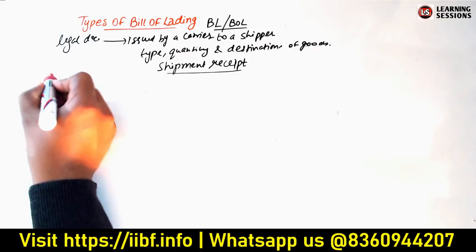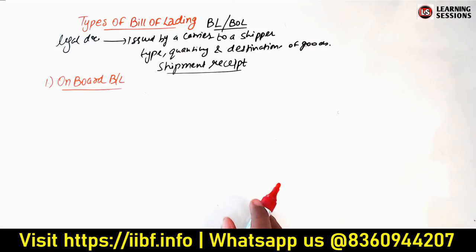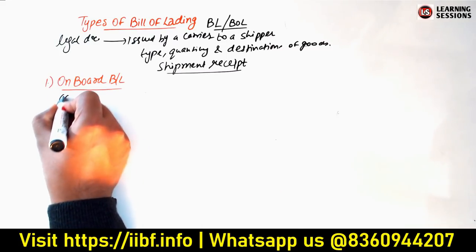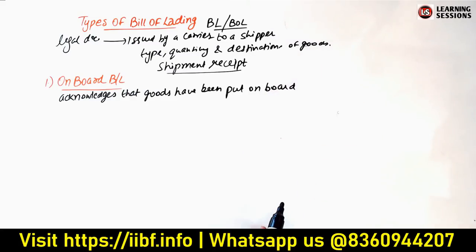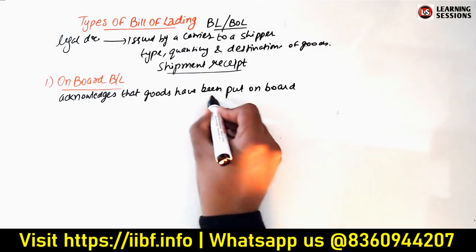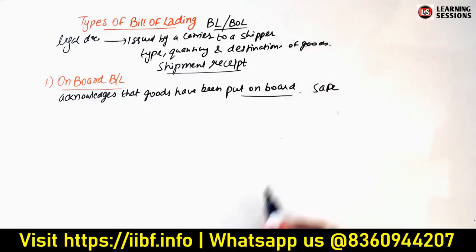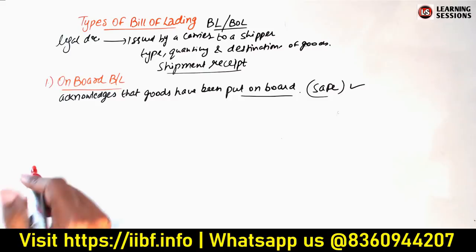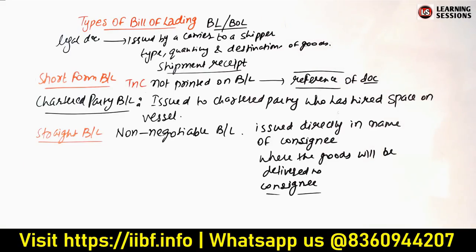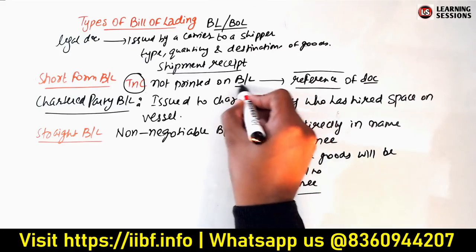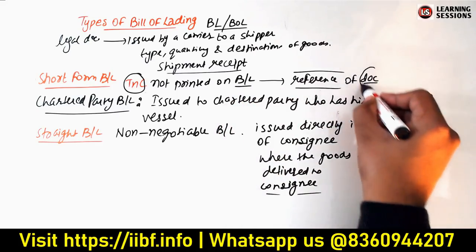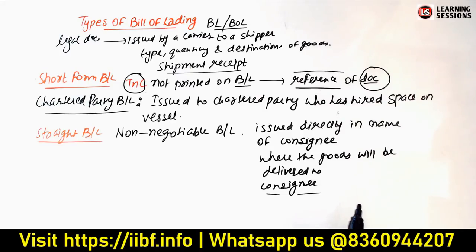First type: On Board Bill of Lading. This acknowledges that the goods have been boarded for shipment. This type of Bill of Lading is considered safe for negotiation purposes. Second type: Short Form Bill of Lading. In this, the terms and conditions are not printed on the Bill of Lading itself; instead, a reference is given to another document where all terms and conditions are printed.